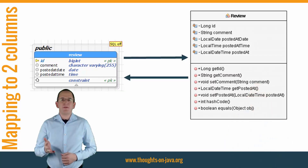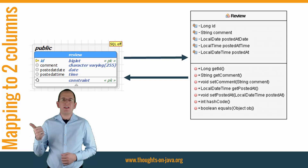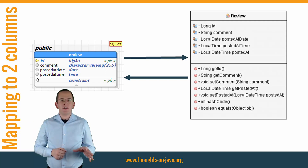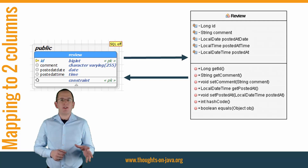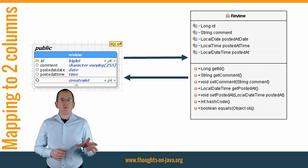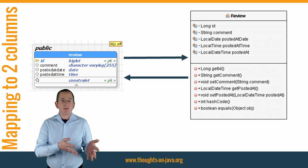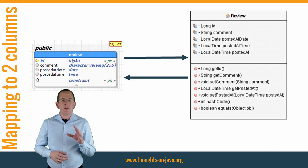Here you can see an example in which I want to use such a mapping. The review table stores the date and the time of the review in the columns postedAtDate and postedAtTime. The review entity maps these two columns to the postedAtDate and postedAtTime attributes. As you can see in the diagram, the review class doesn't provide any getter or setter methods for these attributes, so they are not accessible from the outside. The postedAt attribute doesn't get mapped to a database column, but the class provides a getter and a setter method for it. This is the attribute that will be used by the business logic.